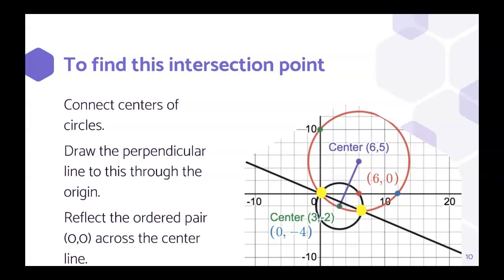And how can we find that intersection point? To find this intersection point, we can connect the centers of the circles and then draw a perpendicular line to this one through the origin. And finally, we can reflect the ordered pair (0, 0) across that center line to find the other point of intersection.